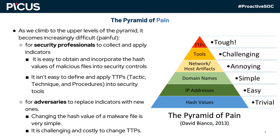For example, from a security professional's point of view, it is easy to obtain and incorporate the hash values of malicious files into security controls, but it isn't easy to define and apply TTPs — tactics, techniques, and procedures — into security tools. From an adversary's perspective, changing the hash value of a malware file is very simple; however, it is challenging and costly to change TTPs.